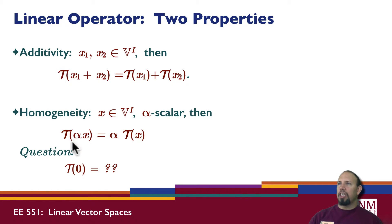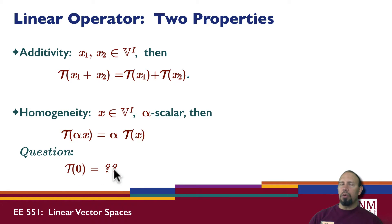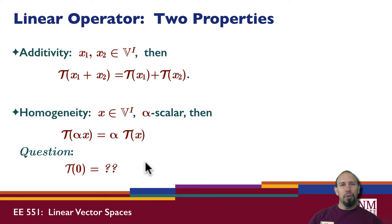Based on these two properties, here's a question. If we have a function that satisfies both of these properties and x is zero, what must that operator equal? It turns out this is a trick question.